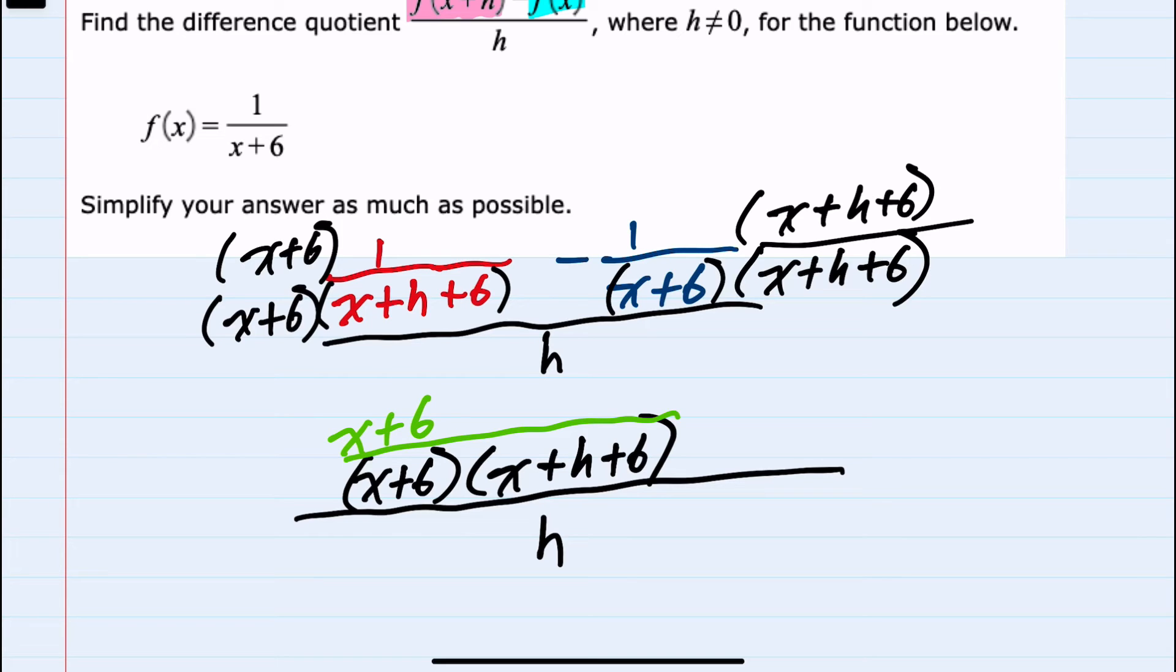On the right hand fraction I'll have to multiply the negative 1 by each term: negative 1 times x is negative x, negative 1 times h is negative h, and negative 1 times 6 is negative 6.